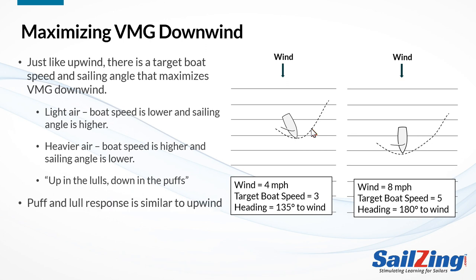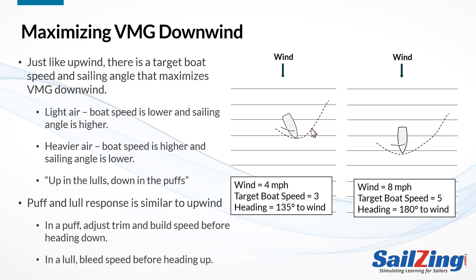Let's spend a few moments talking about puff and lull response downwind. If you're reaching up a little in light air and a puff comes along, should you head down immediately when it hits you? Just like the upwind response, the answer is to build to your new target speed as quickly as possible and then head down. For a lull, bleed your speed while gaining distance downwind before you head up — this might only take a few seconds.